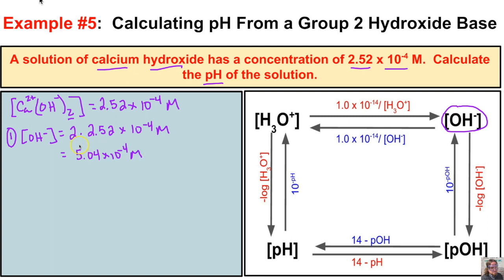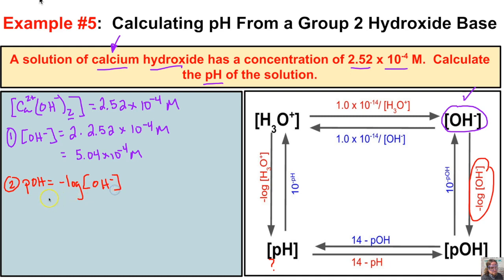Whenever you have a strong base where hydroxide is bonded to a group two atom like calcium, and you're given the concentration of the entire substance rather than just the hydroxide, you first have to find the hydroxide ion concentration. Now in step two, we take the negative log of the OH⁻ concentration: −log(5.04×10⁻⁴) = pOH of 3.30.